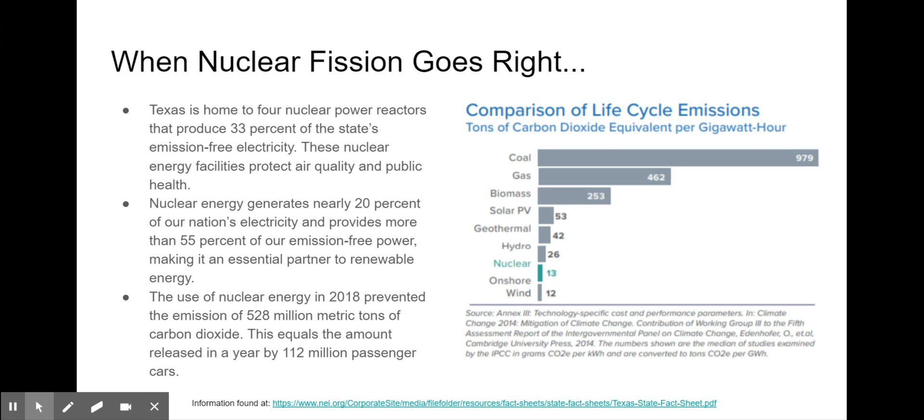It's essential as a partner to renewable energy. The use of nuclear energy in 2018 prevented the emission of 528 million metric tons of carbon dioxide. This is equal to the amount released in a year by 112 million passenger cars.